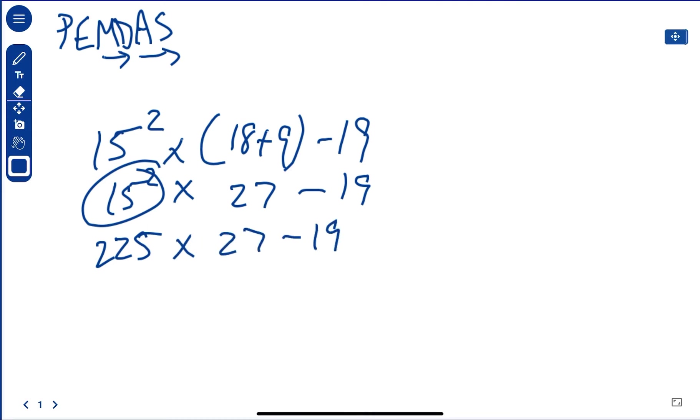Okay. So now we can do our multiplication, 225 times 27, and that is 6,075. I'm going to erase this so you don't think it's a fraction.